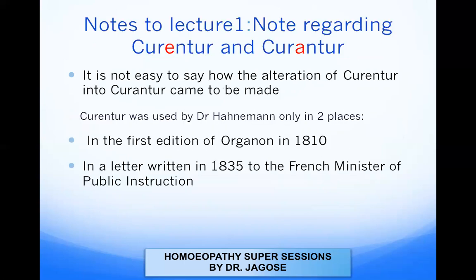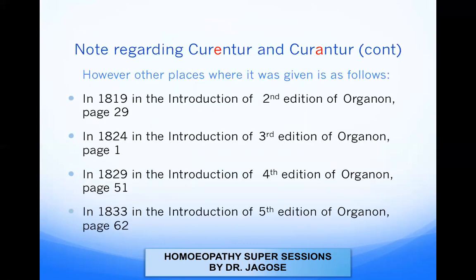Now let us see the notes to lecture 1, regarding curetur and curanda. It is not easy to say how the alteration of curanda into curetur came about. Curetur was first used by Dr. Hahnemann only in two places: in the first edition of the Organon in 1810, and in a letter written in 1835 to the French Minister of Public Instruction. Other places where curanda was given are as follows: in 1819, in the introduction of the second edition of the Organon, page 29; in 1824, in the introduction of the third edition, page 1; in 1829, the introduction of the fourth edition, page 51; and in 1833, in the introduction of the fifth edition, page 62.